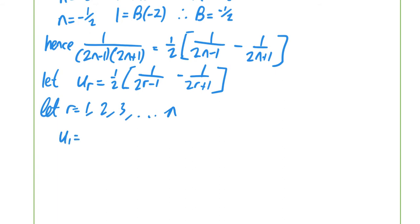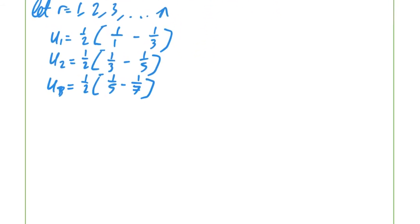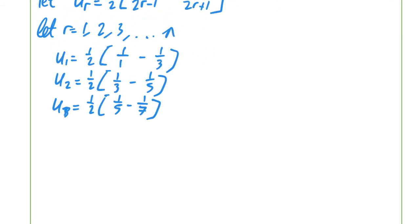So u₁, when r=1 is substituted in, equals one half times [1/1 minus 1/3]. Then u₂ equals one half times [1/3 minus 1/5]. For good measure, u₃ equals one half times [1/5 minus 1/7], and so on.